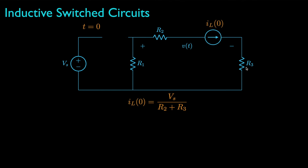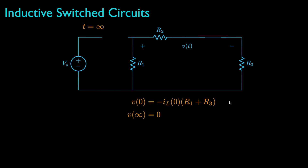At the moment the switch is opened, we replace the inductor with a current source with the current through the inductor at the moment just before the switch was opened, which was V sub s over R2 plus R3. Then by using Kirchhoff's voltage law, we can determine that the voltage drop V of t at t equals zero is negative i sub l zero — the initial current through the inductor — times R1 plus R3. Then in steady state, the voltage source is isolated from the rest of the circuit and the voltage drop will be zero. Finally, the equivalent resistance as seen by the inductor after the switch is opened is the sum of the three resistances that are in series, and the resulting time constant is the ratio of the inductance to this equivalent resistance.